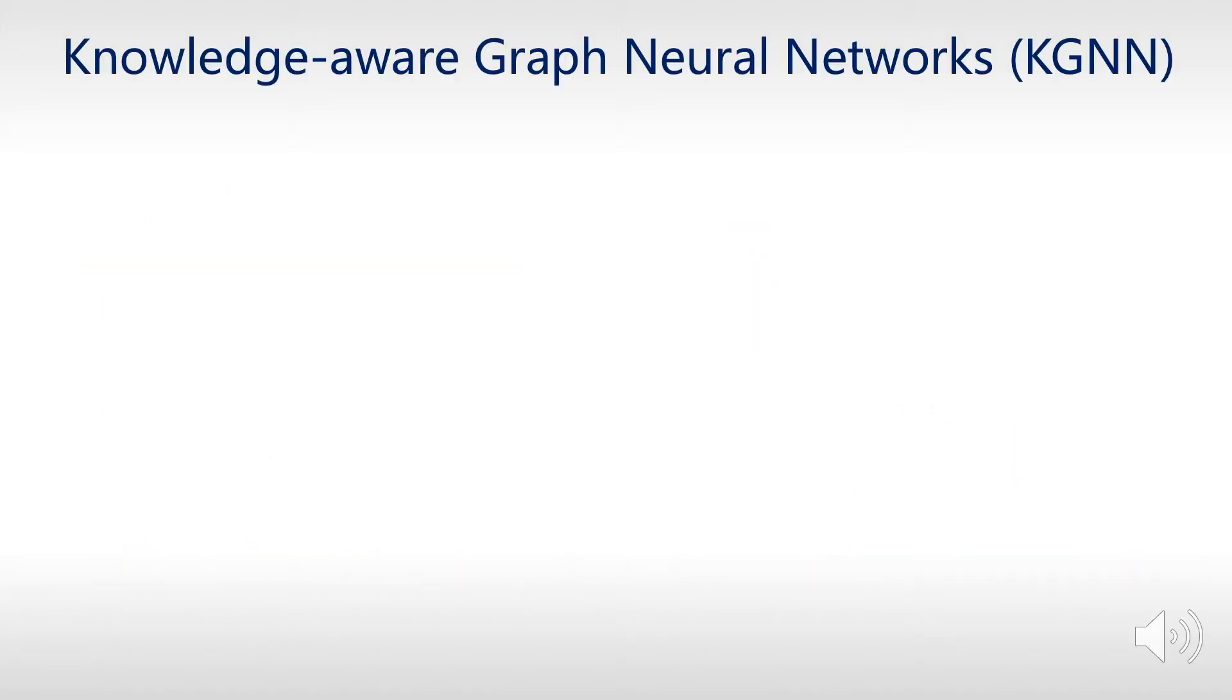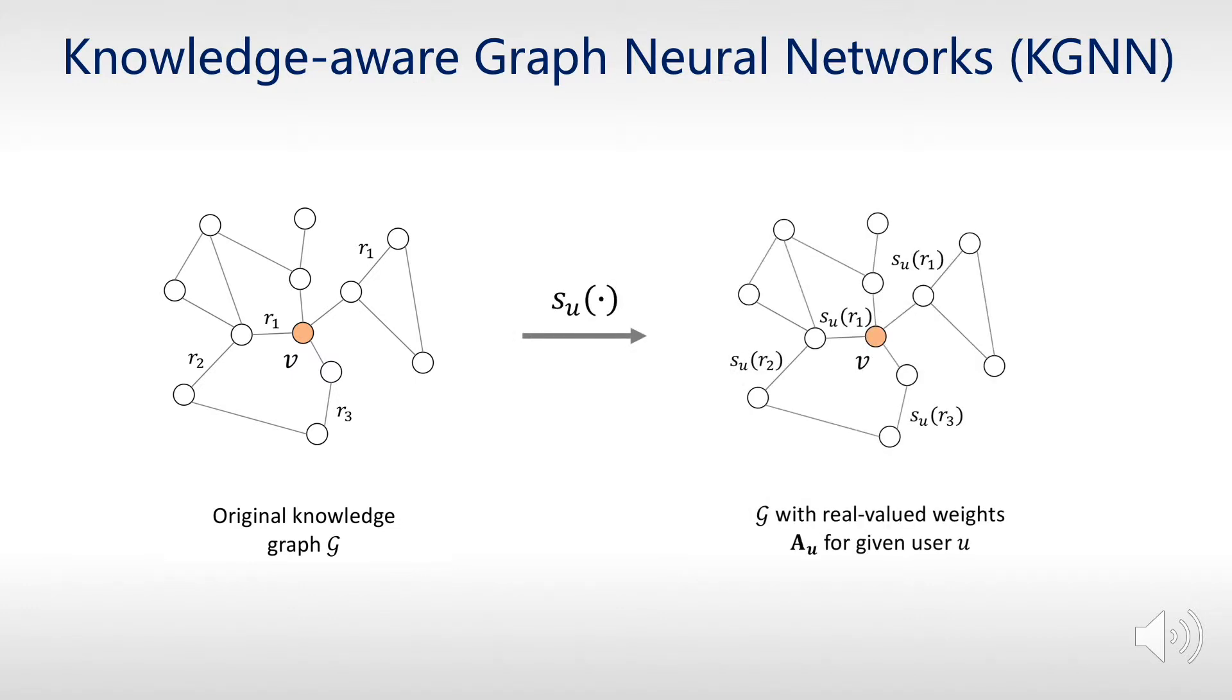We present knowledge-aware graph neural networks for recommender systems. We use a trainable and personalized relation scoring function to transform the heterogeneous knowledge graph into a user-specific weighted graph, which characterizes both the semantic information of the knowledge graph and the user's personalized interests.